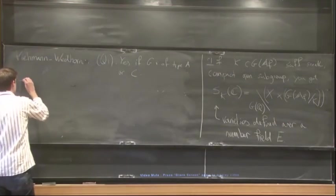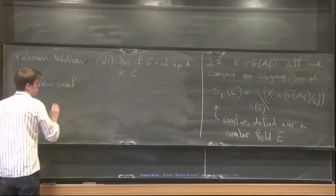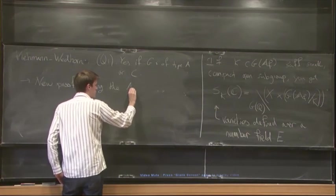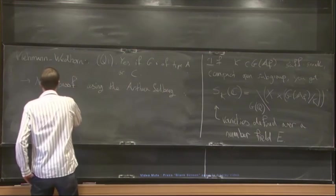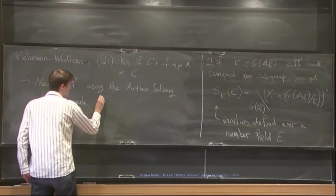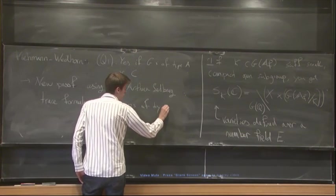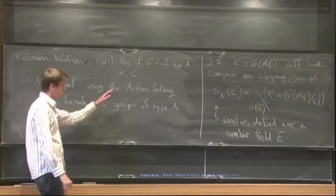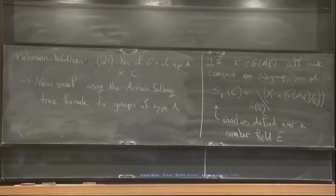So in my thesis, I gave a new proof of this result using the trace formula. So the Arthur-Selberg trace formula for groups of type A, and I have a conditional result for the groups of type C. So it's conditional stabilization of the twisted trace formula.